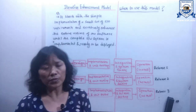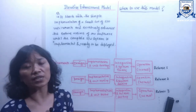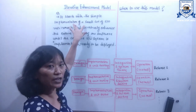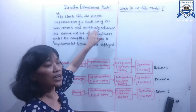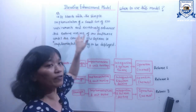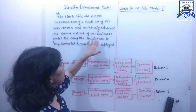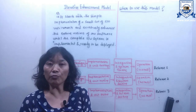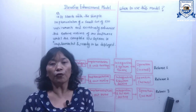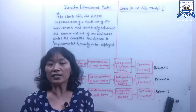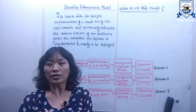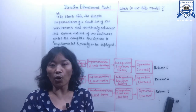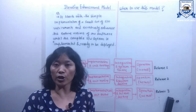The iterative enhancement model basically starts with a simple implementation of a small set of requirements and iteratively enhances the evolving versions of the software until the complete software system is implemented and ready to be deployed. Overall, the iterative model does not need full specification of requirements. It can start with a few requirements and then iteratively enhance the model through continuous or iterative releases.